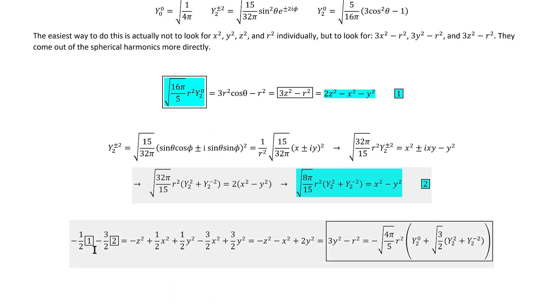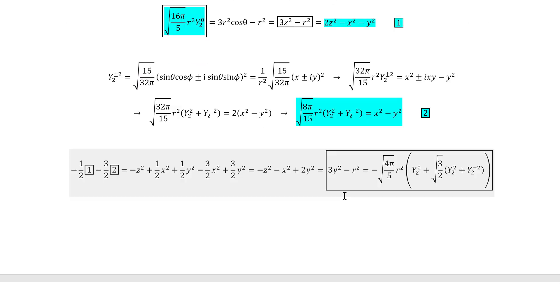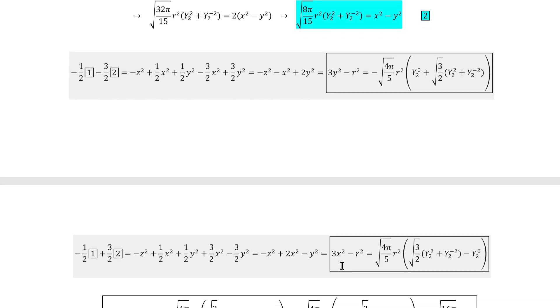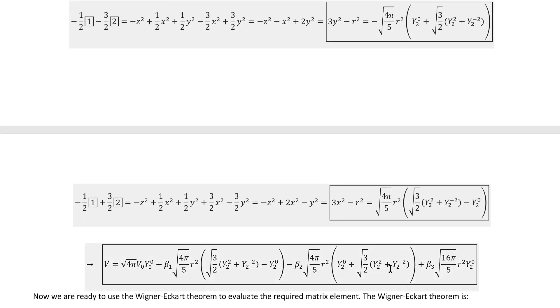It turns out that if we take this specific linear combination of equations one and two, we find this result for one of those key linear combinations of square distance variables that we were looking for. And we can actually find a third simply by taking a slightly different linear combination of the same two equations. And with that, we can finally rewrite the potential completely in terms of spherical harmonics, which we've got right here.